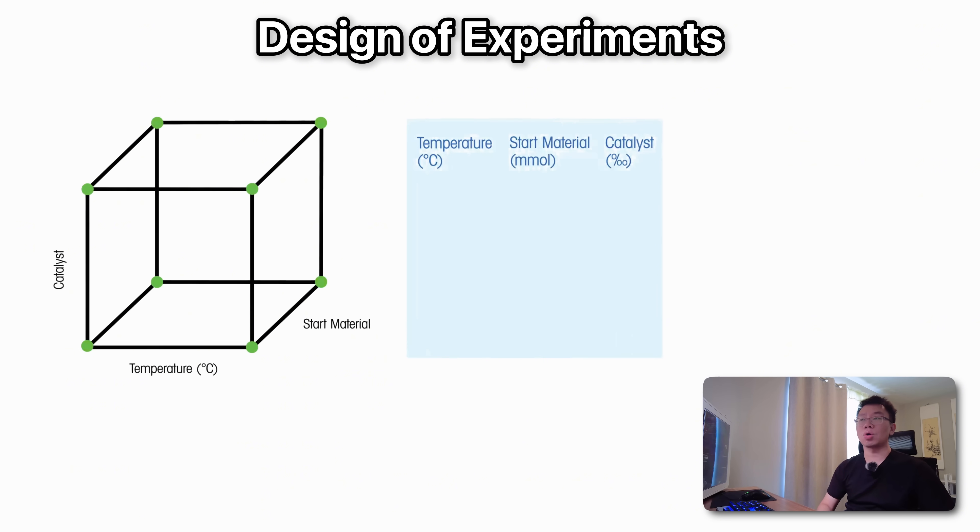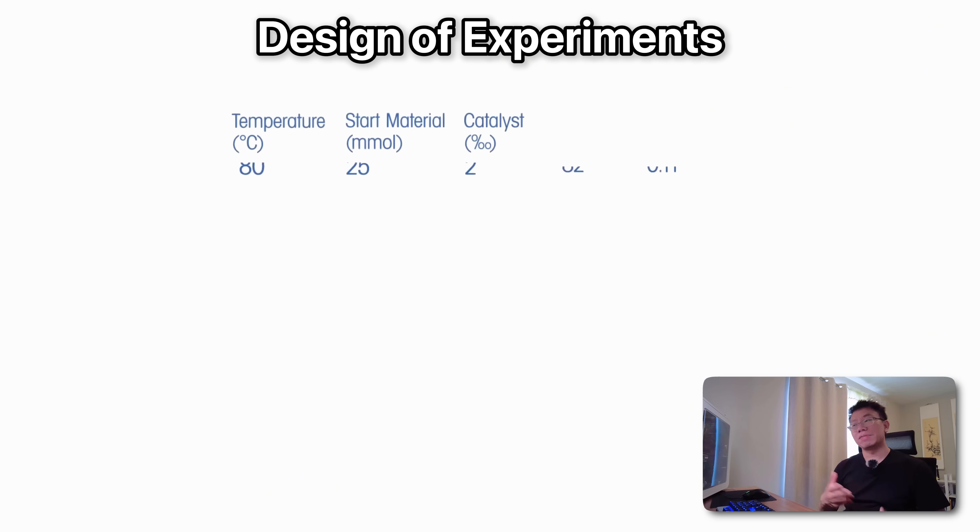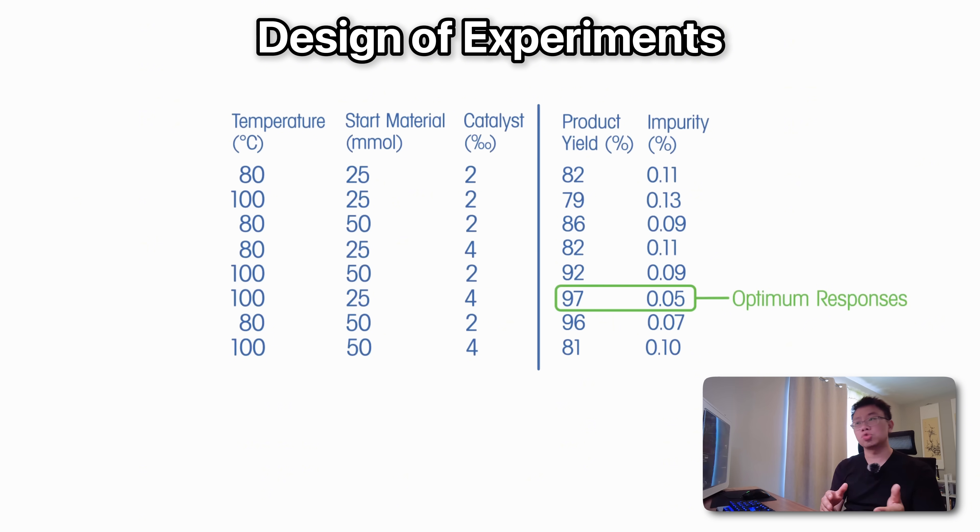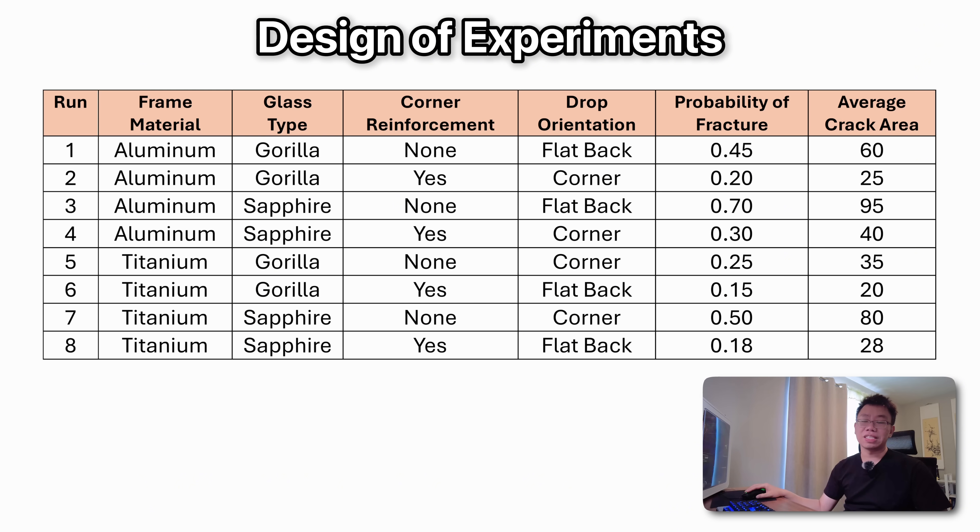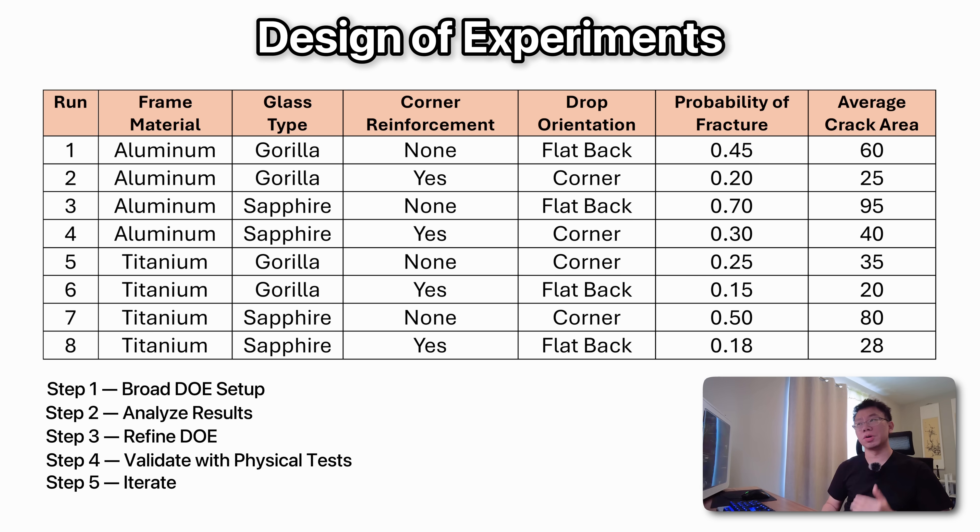To set up any DOE we define ranges or levels for each input factor and build a test matrix. Putting everything together the matrix shows how different input combinations translate into different performance outcomes. Here's a simplified example of a DOE matrix for a smartphone drop test. So the first design of experiments would be broad and it shows us which factors matter most. From here we can refine and focus on top performing combinations, narrow tolerances, and rerun the DOE. Finally we would validate the best candidates with physical drop tests to ensure the simulations hold up in real life. The key here is that design of experiments doesn't give a single right answer but instead reveals trade-offs between multiple inputs or factors. Maybe one combination minimizes fracture probability, another minimizes crack area, and another balances weight and cost. The mechanical engineer's job is to interpret these trade-offs and to choose the best solution for the design goals.